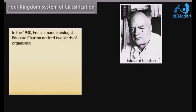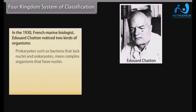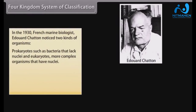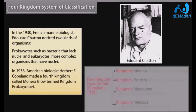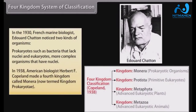Four Kingdom System of Classification. In the 1930s, French marine biologist Edward Chatton noticed two kinds of organisms: prokaryotes, such as bacteria that lack nuclei, and eukaryotes, more complex organisms that have nuclei. In 1938, American biologist Herbert F. Copeland made a fourth kingdom called Monera, now termed kingdom Prokaryota.